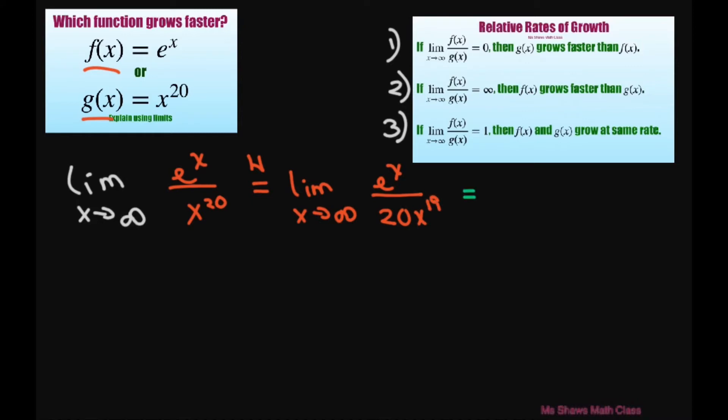Now let's use L'Hopital's rule again. That's going to be e to the power of x and then we have 20 times 19 times x to the power of 18. Let's do it one more time.